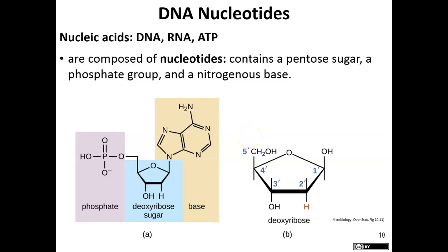Let's look at what DNA is. DNA is a nucleic acid, and nucleic acids include your DNA, your RNA, and your ATP. ATP is the energy currency of our cells. DNA is the genetic information that is heritable and codes for proteins, and RNA is the workhorse that actually produces those proteins.